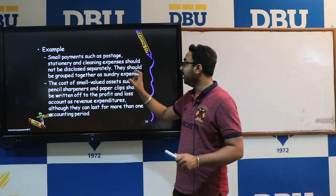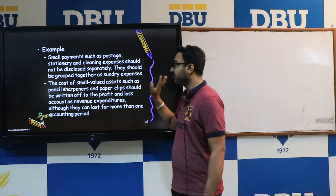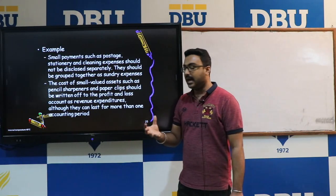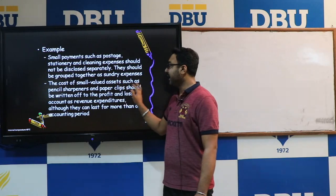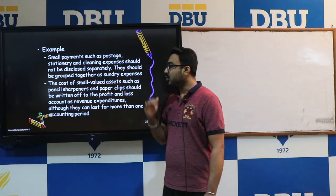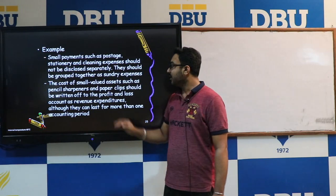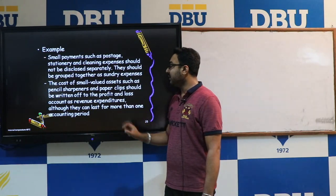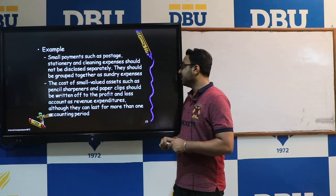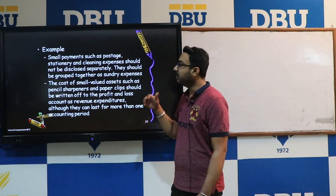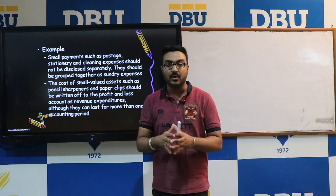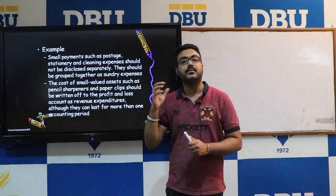The cost of small valued assets such as pencil sharpeners and pencil clips should be written off to the profit and loss account as revenue expenditure, although they can last for more than one accounting period. These are some examples which fall under the category of the Materiality concept of accounting.